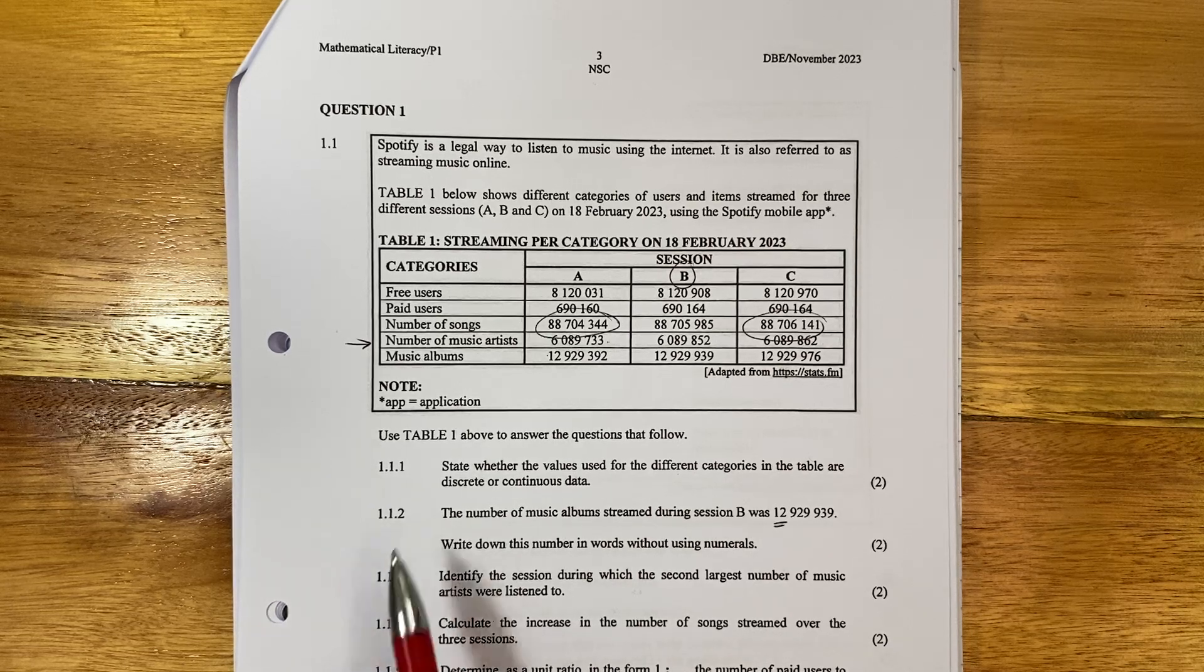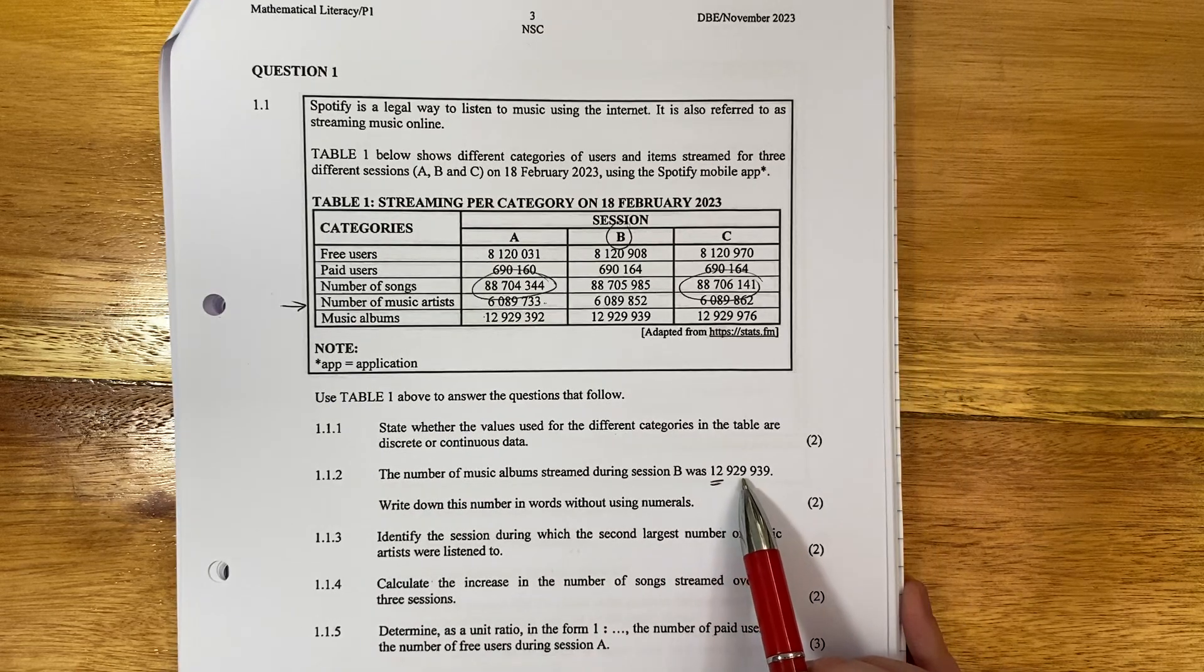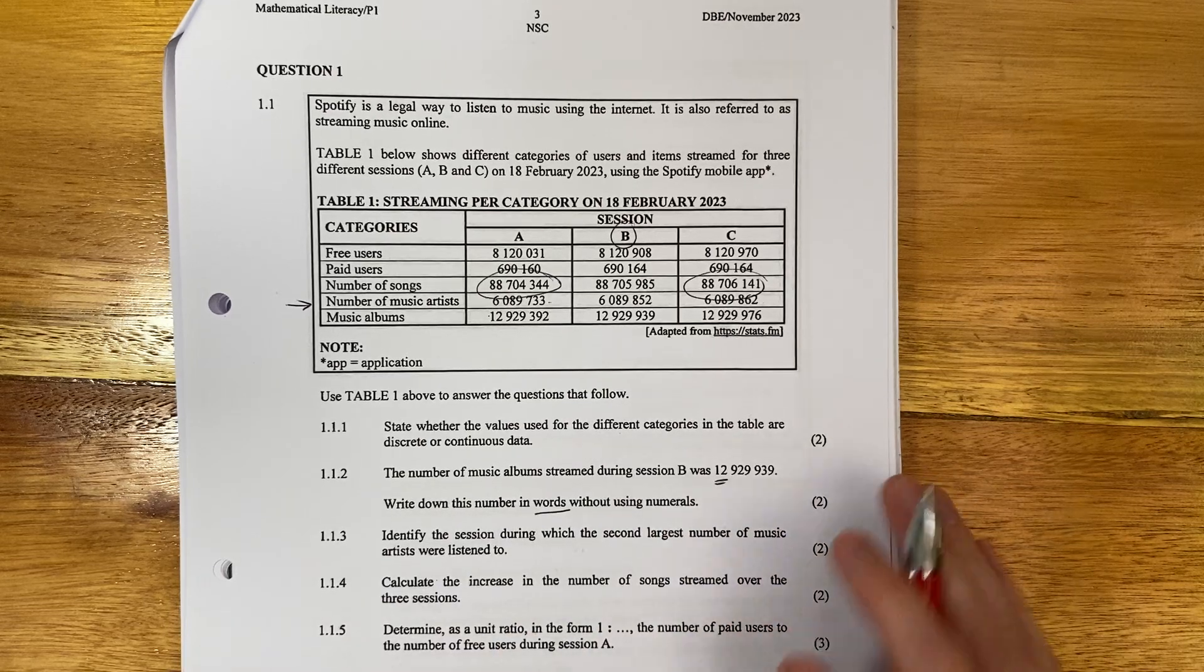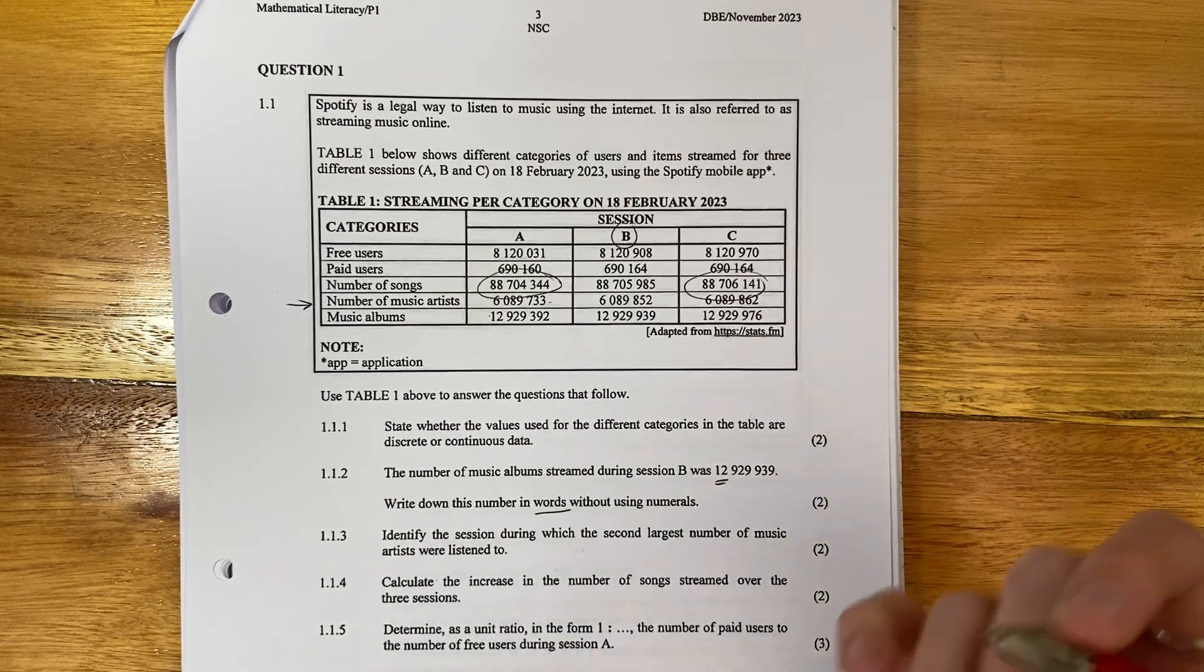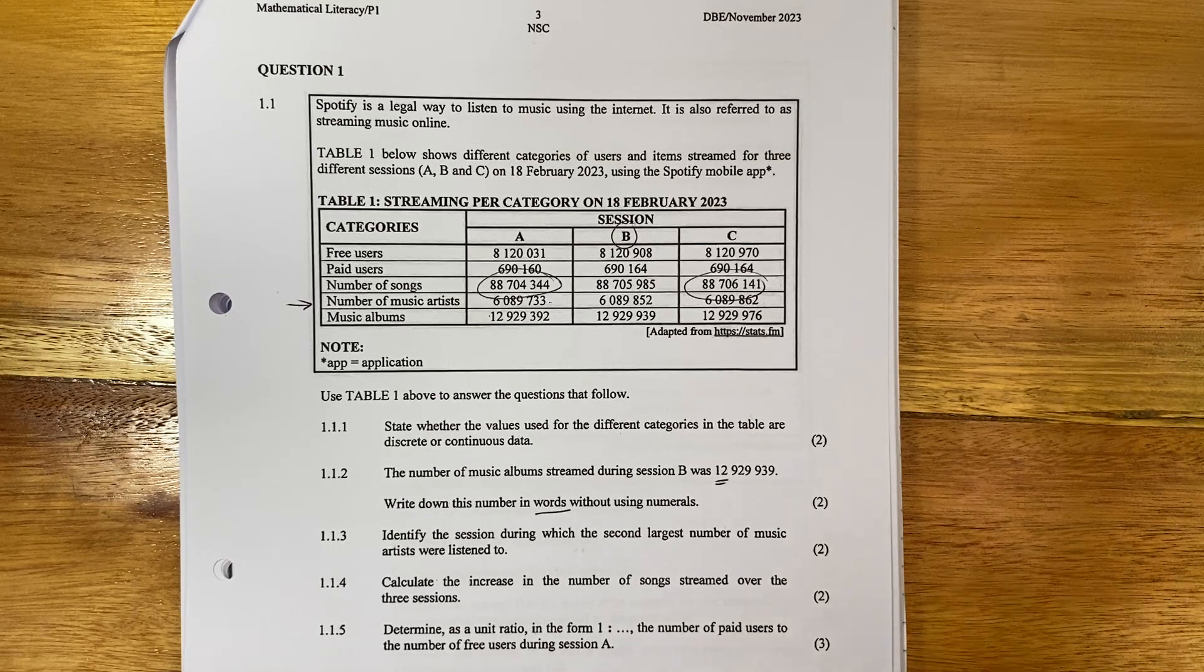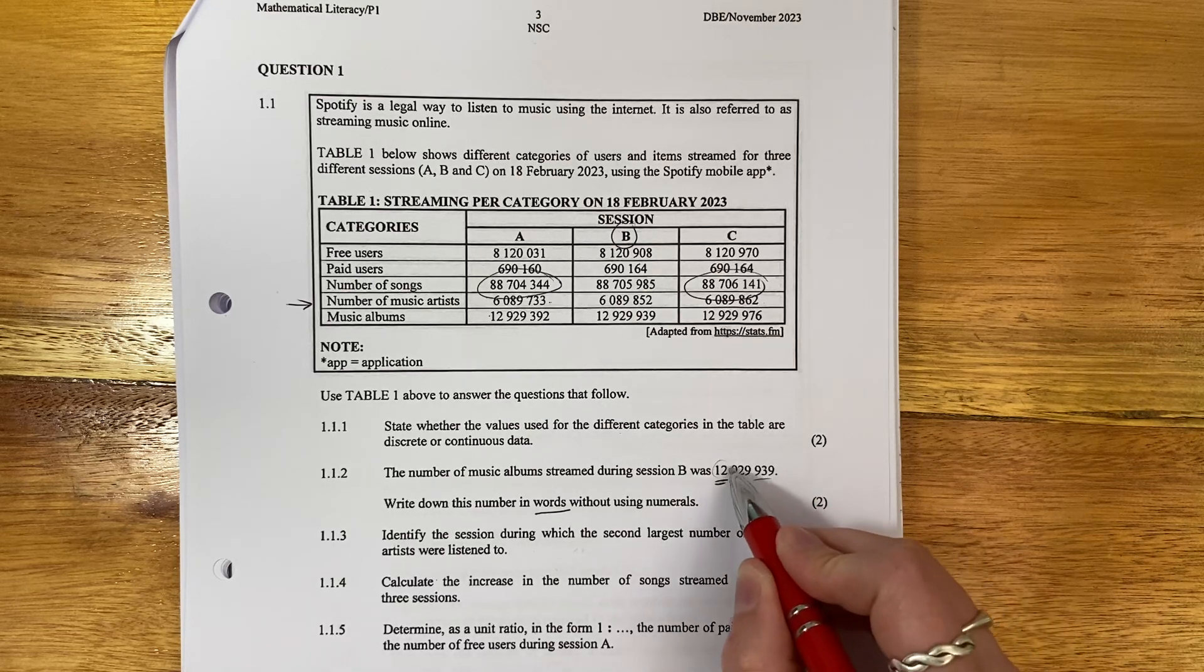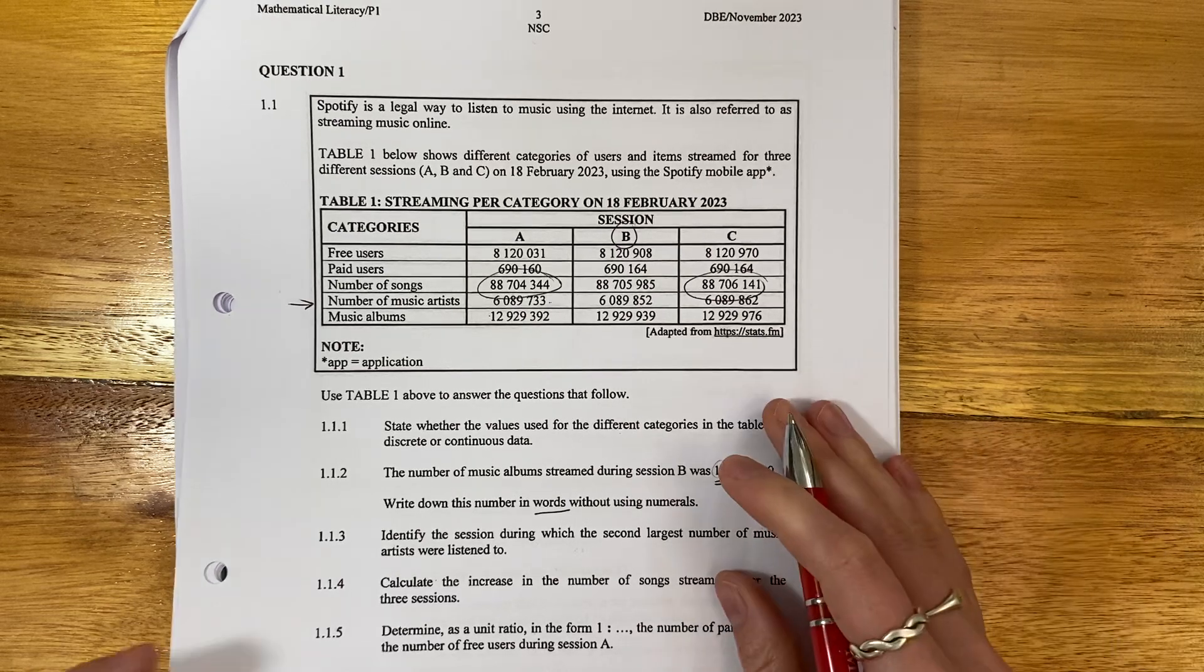1.1.2. The number of music albums streamed during session B was 12,929,939. Seems like a phone number. But then the question says, write down this number in words without using numerals. So basically, we don't want numbers up in here. We want you to write that out in full. Now this just shows what they're testing is that you know your decimals, your hundreds, your tens, your hundreds, your thousands, your millions. So this is 12 million, because there's six units after it, or six numbers after it. So it's 12,929,939. So let's write that out.